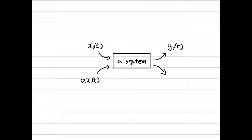Then what is the linear system? A system that has two properties is called a linear system. The first property is called scaling or homogeneity. Scaling or homogeneity property means the following: let's assume a system of which output is y1(t) for the input signal x1(t). For a scaled input alpha*x1(t), if the output is also scaled with the same amount alpha, like alpha*y1(t), then the system has the scaling property.